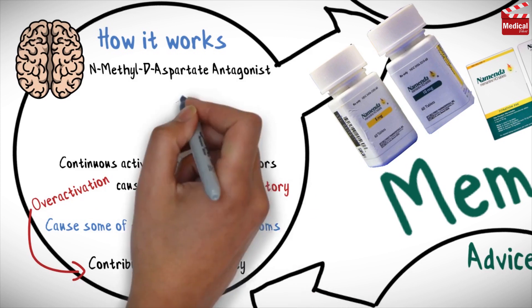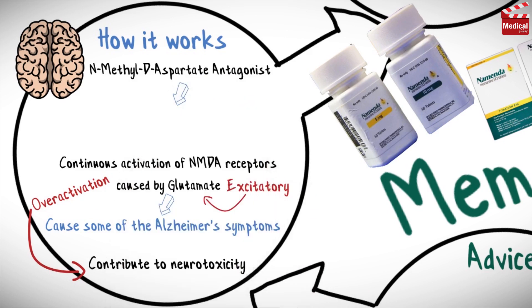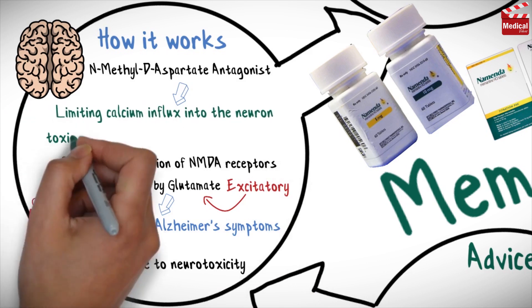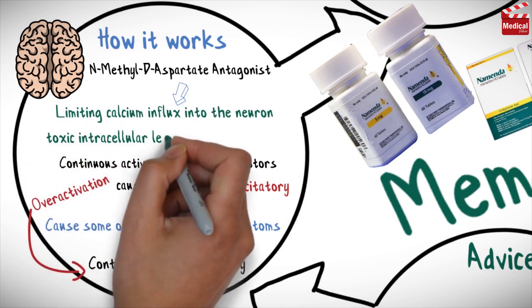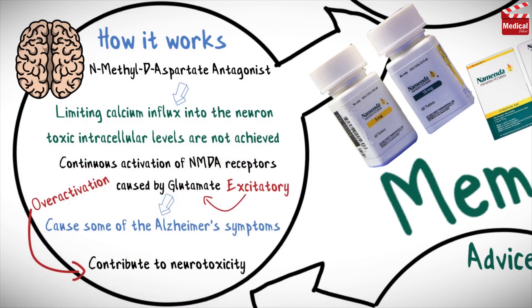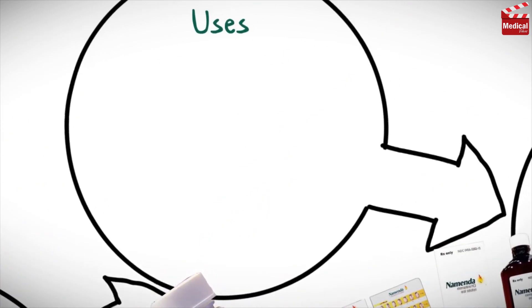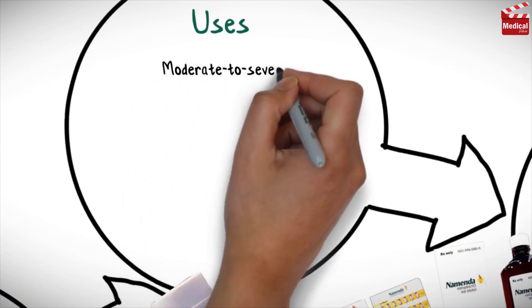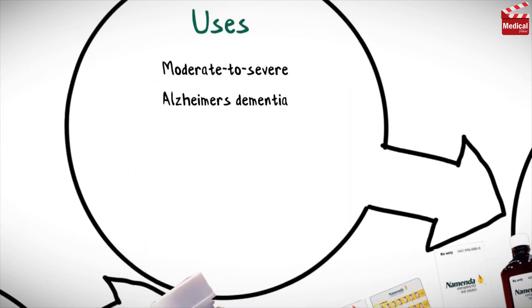Memantine acts by blocking the N-methyl-D-aspartate receptor and limiting calcium influx into the neuron such that toxic intracellular levels are not achieved. It is used for moderate to severe Alzheimer's dementia.